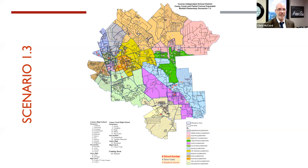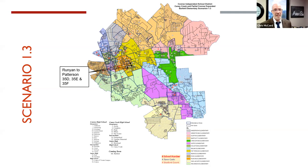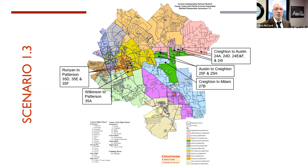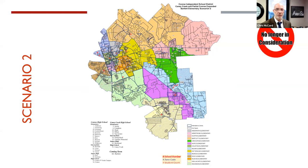Scenario 1.3, which we are currently vetting: Barton Creek — zone 35D-E — would move from Runyon to Patterson. Wilkerson to Patterson, 35A Barton Woods. Creighton to Milam — this is Tanglewild, 27B. Austin to Creighton, right along Waukegan Road. And then over here along 105, some smaller areas but also many students further to the east along 105.